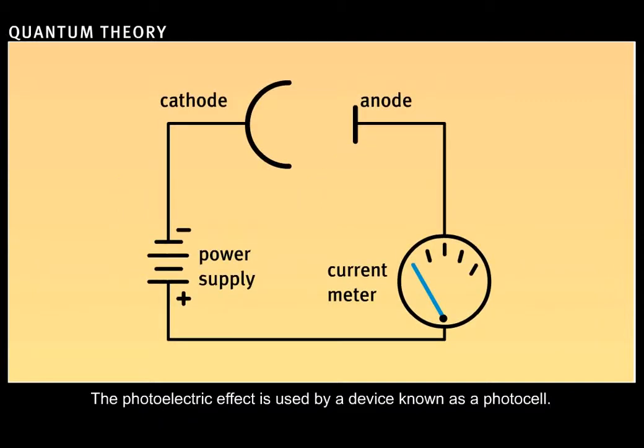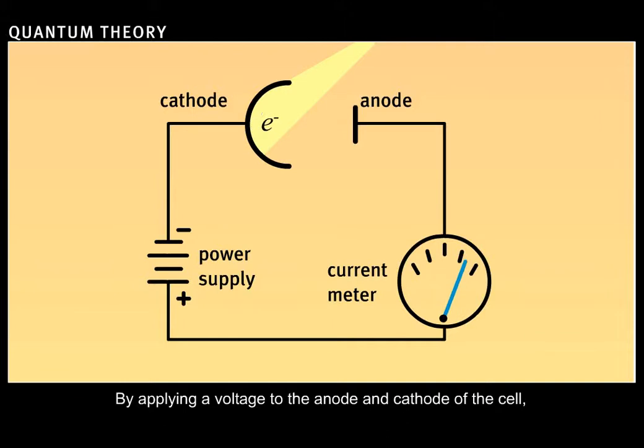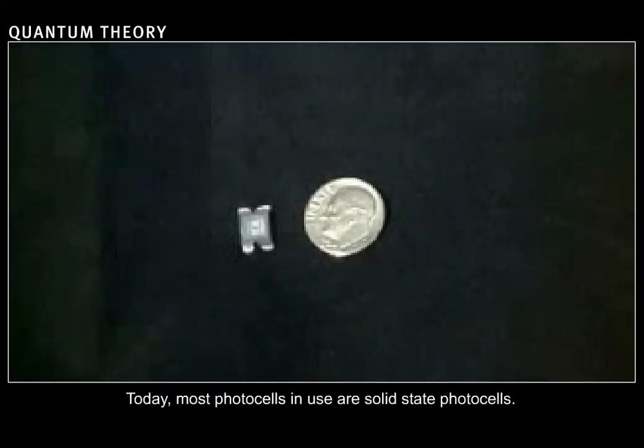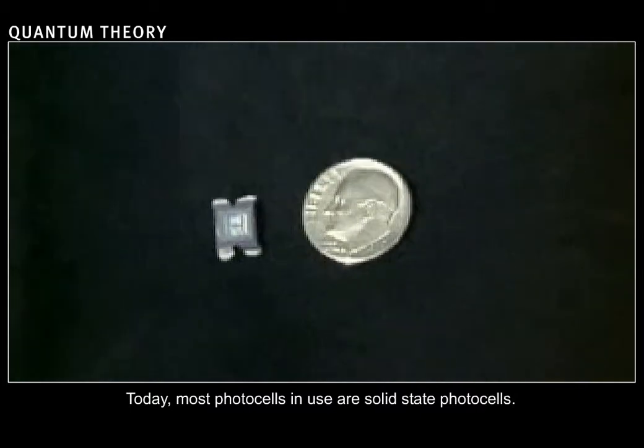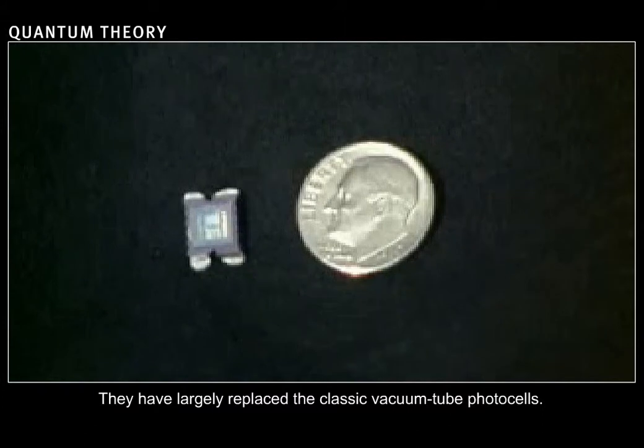The photoelectric effect is used by a device known as a photocell. In one such device, a photosensitive metal is used as a cathode in an evacuated tube. By applying a voltage to the anode and cathode of the cell, the photoelectrons emitted by the cathode move to the anode and a current flows in the circuit. Today, most photocells in use are solid-state photocells. They have largely replaced the classic vacuum tube photocells.